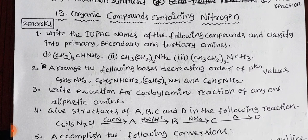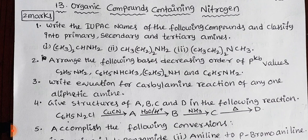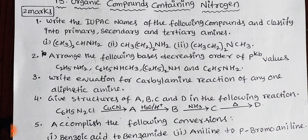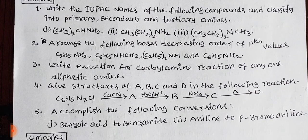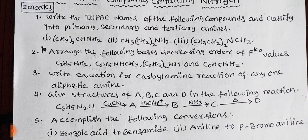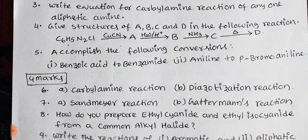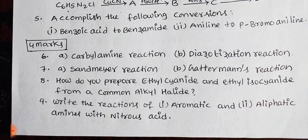Next: organic compounds containing nitrogen — 4 marks or 2 marks, with a good chance. 4-mark questions include: Carbylamine reaction and diazotization reaction — 7th question, each carries 2 marks, total 4 marks. Also Sandmeyer reaction and Gattermann reaction — 8th section. These are important 4 to 8 mark topics.